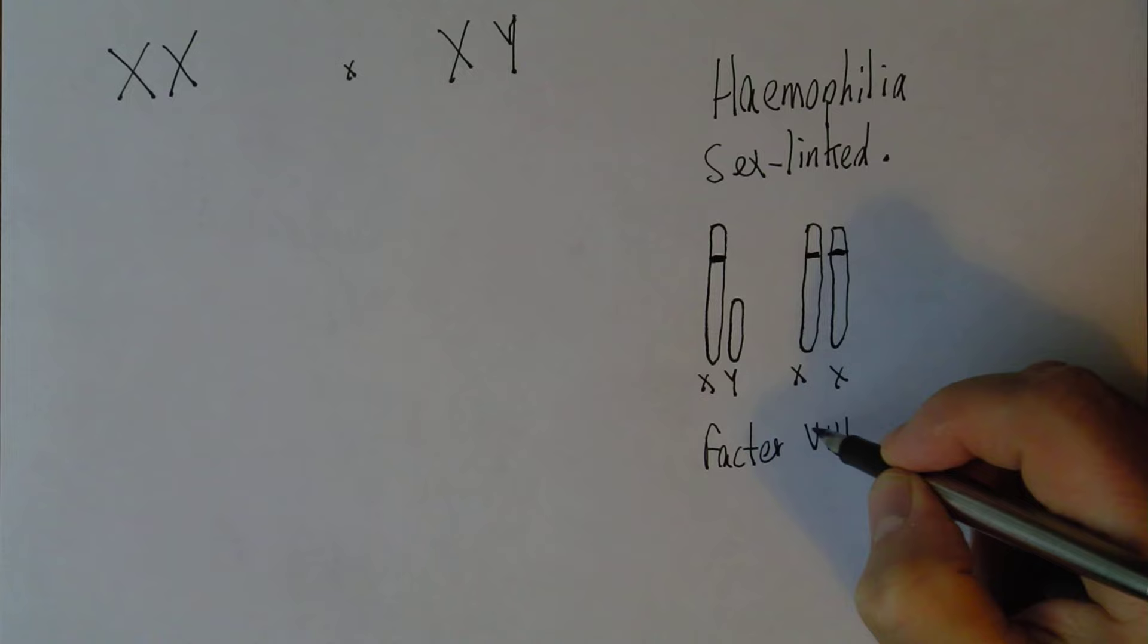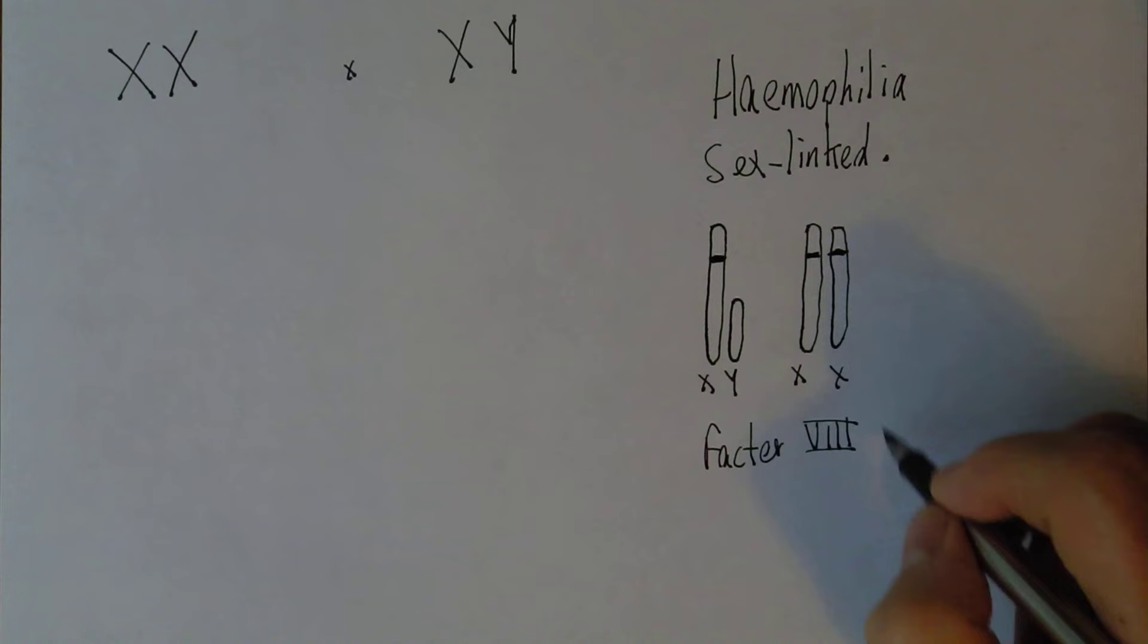Factor VIII is an essential clotting factor for the blood. It's an essential part of the coagulation cascade, so without Factor VIII present, the blood cannot clot properly.